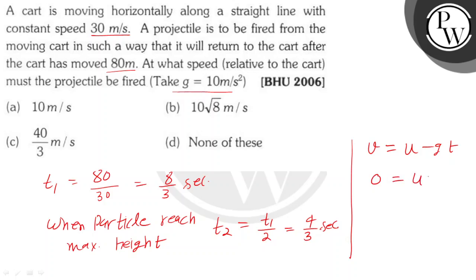The initial component is u. Using 0 equals u minus g times t, putting g equals 10 and time equals 4 by 3, we get u equals 40 by 3 meter per second.